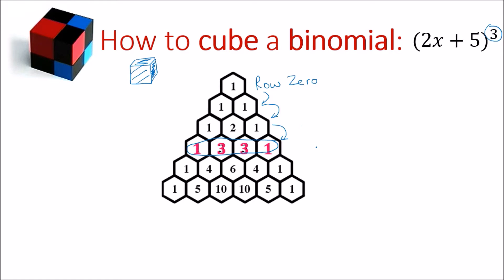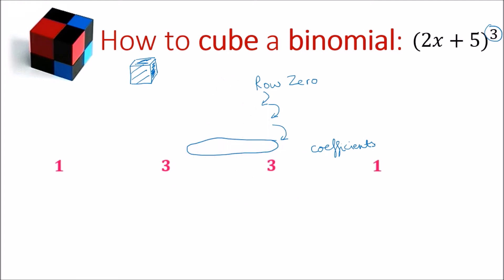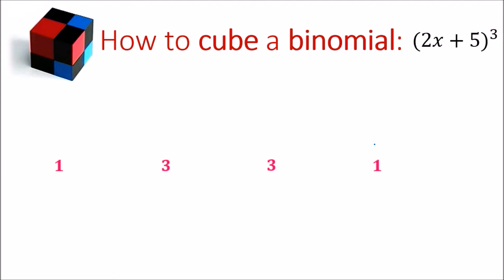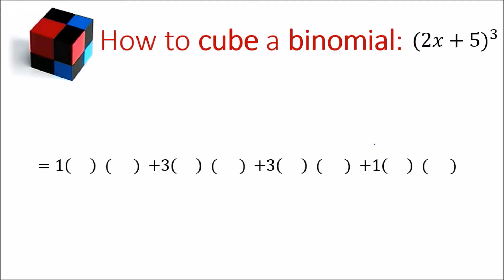These numbers are what we call coefficients — they're going to be used to work out the expanded form of this cubed binomial. We'll take the numbers 1, 3, 3, 1 and expand them out. First, put an equal sign in front of the 1 and plus signs in front of the other coefficients. Next, put two brackets following each coefficient. Then we need to put a term in each bracket, taking that first term from our original binomial, which is 2x, and placing it in each of these brackets.